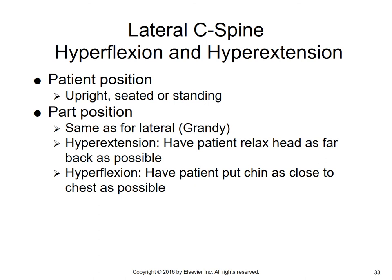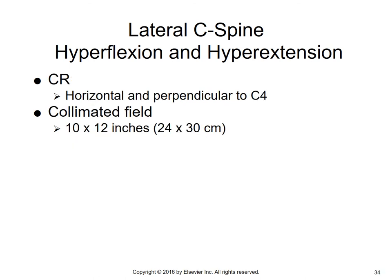For hyperflexion and hyperextension, patient position is upright, seated, or standing. Part position is the same as the lateral Grandy method. For hyperextension, have the patient relax the head as far back as possible. For hyperflexion, have the patient put their chin as close to the chest as possible. Central ray is horizontal and perpendicular to the level of C4 at mid-neck. Collimated field is 10 by 12 inches.